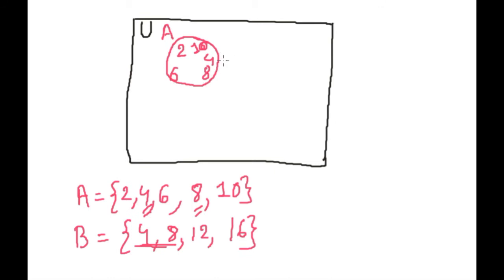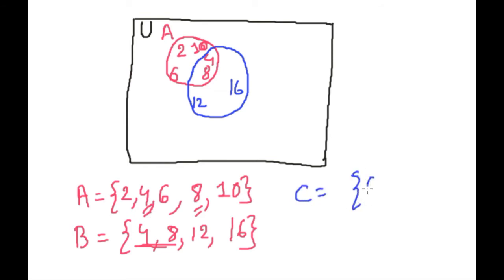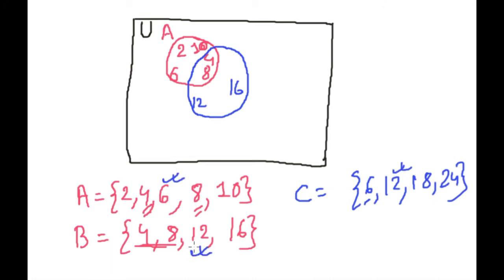Now we will draw circle B. B contains 4, 8, 12, and 16. Set C = {6,12,18,24}. We can see that 6 is common with set A, and 12 is common with set B. So few parts from set A and set B overlap with C. We make the diagram so that the overlapping regions are shown. The yellow circle is C, containing 6, 12, 18, and 24.